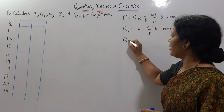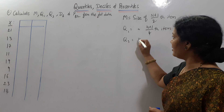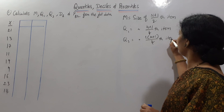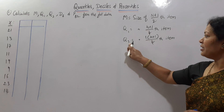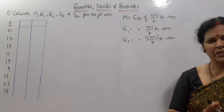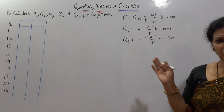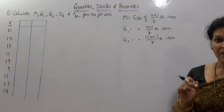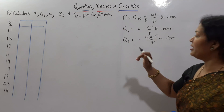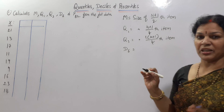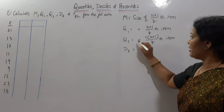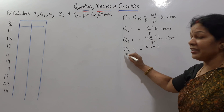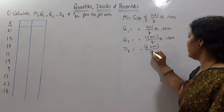Next, Q3 means quartile 3, which is 75%. The formula is: 3 into n plus 1 by 4th item. For deciles, D6 formula is: size of 6 into n plus 1 by 10th item.